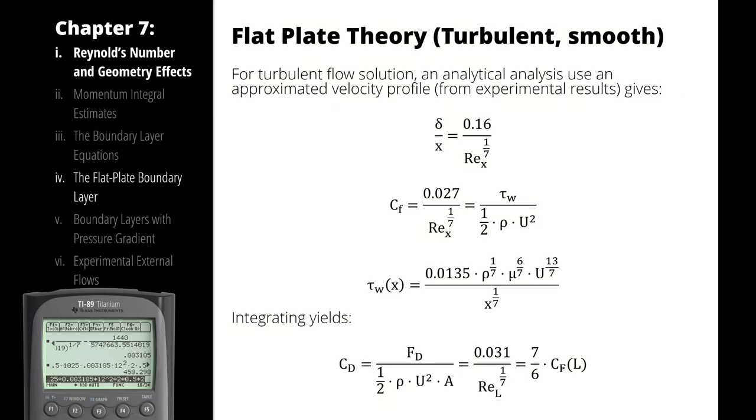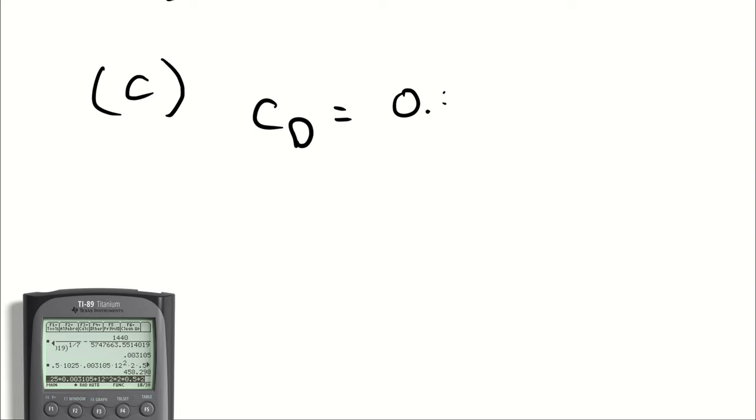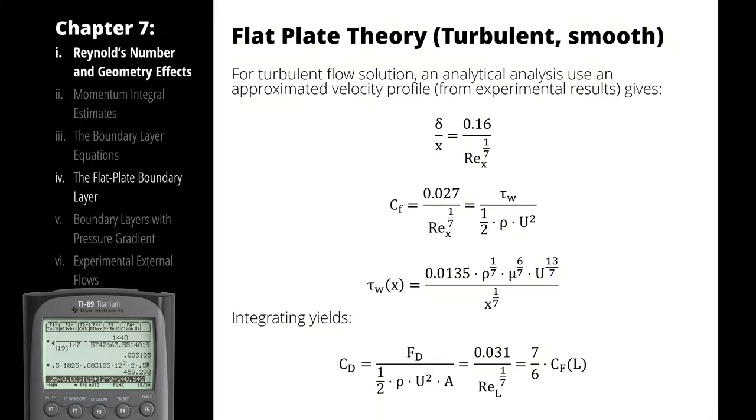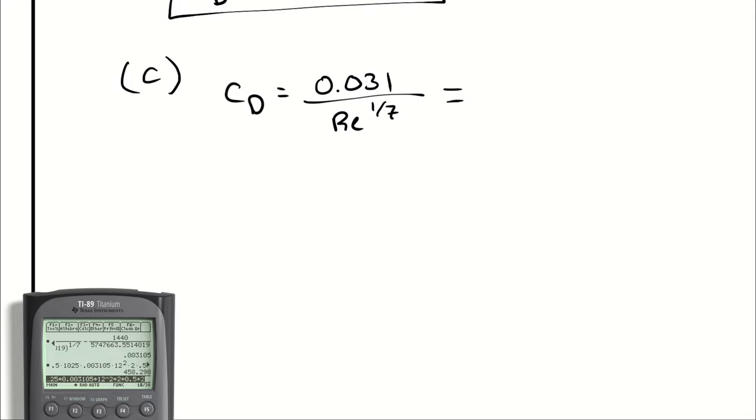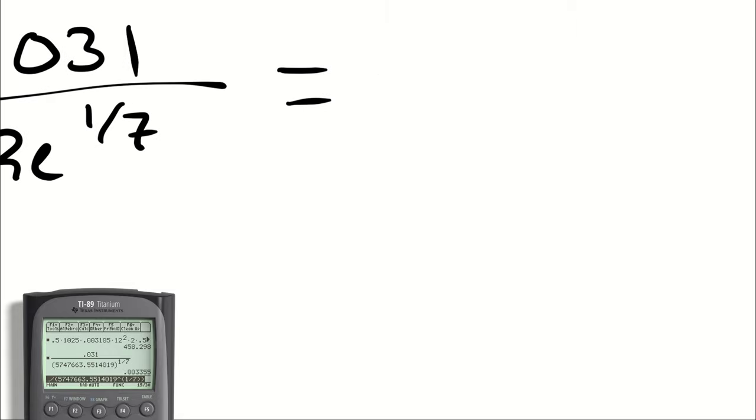So, that equation is 0.031 divided by the Reynolds number to the 1/7th power. And that's 0.031 divided by that number to the power of 1 over 7. And we get 0.003355.